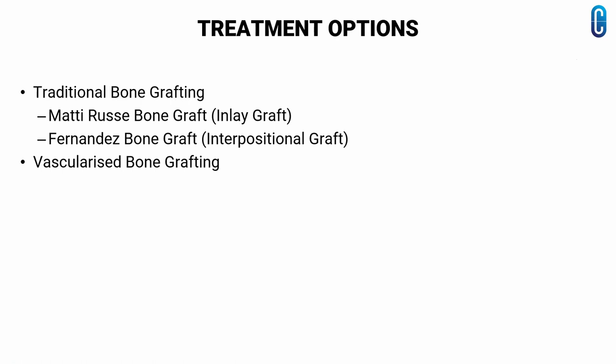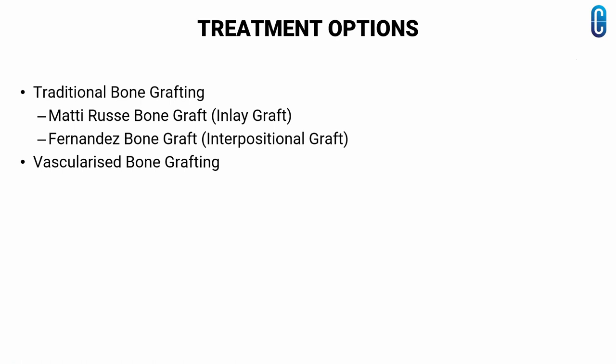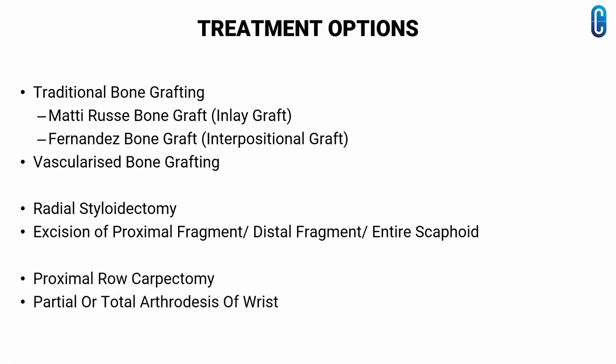We also have vascularized bone grafting, radial styloidectomy, and excision of the proximal fragment, distal fragment, or even the entire scaphoid. Finally, we have proximal row carpectomy and partial or total arthrodesis of the wrist.